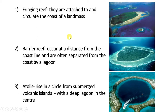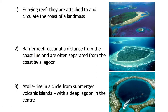There are different types of coral reefs — three major types. We have the fringing reef, the barrier reef, and the coral atoll. Fringing reefs are attached to and circulate around the coast of a landmass. A barrier reef, however, occurs at a distance from the coastline — it is quite far away from the coastline.